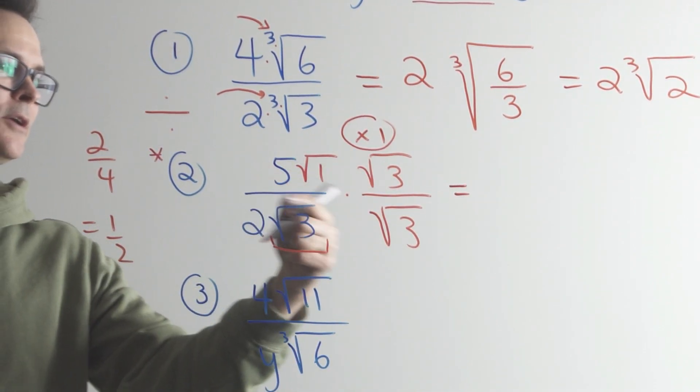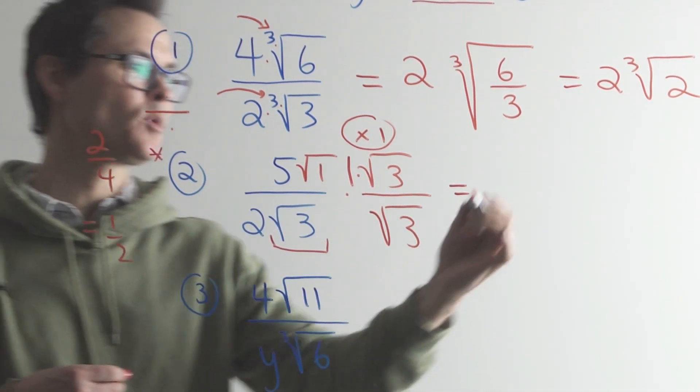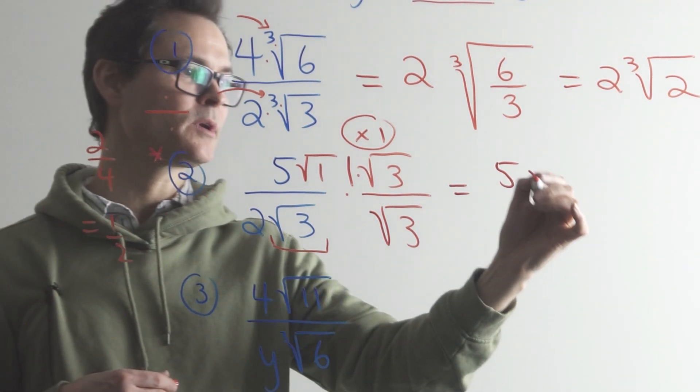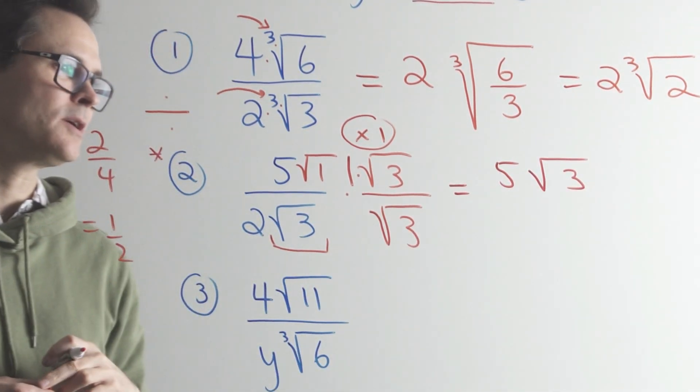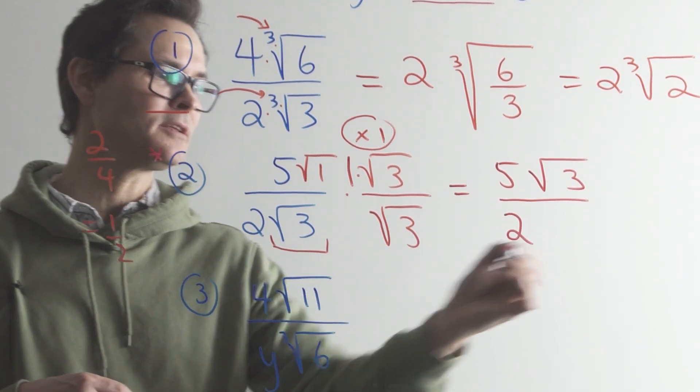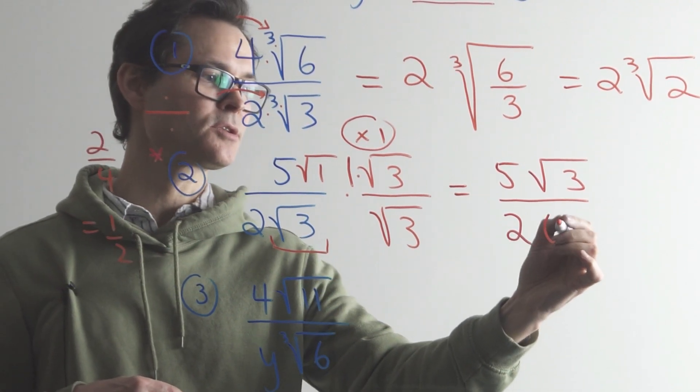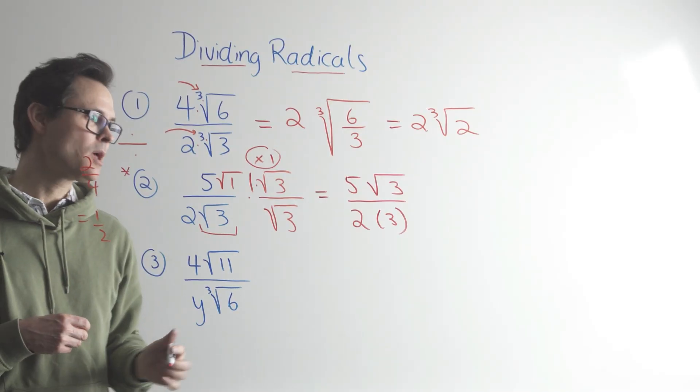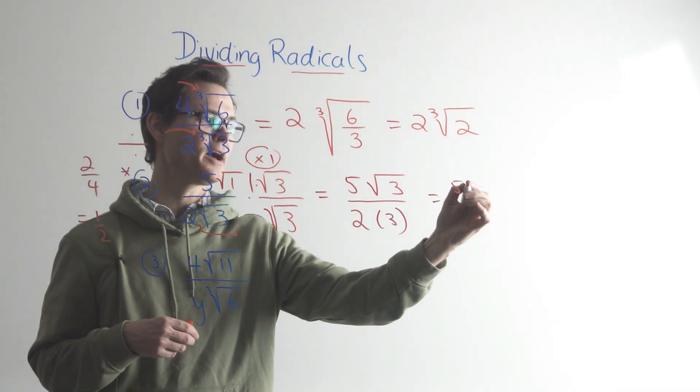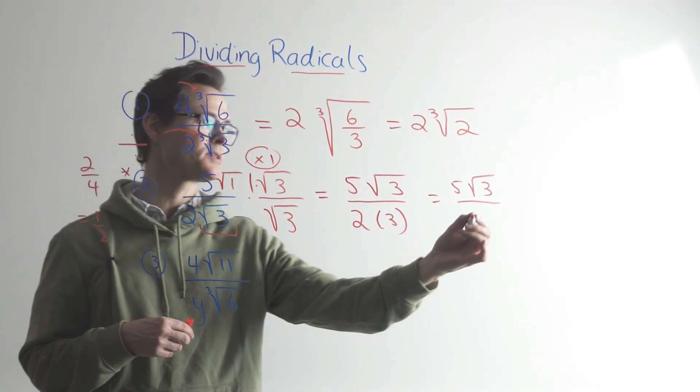So in the numerator, what I have here is, there's a coefficient of one there. Five times one is five. And then the square root of one times the square root of three is the square root of three. In the denominator, this is where the magic works. The two has to stay. It's sitting there. And then the root three times the root three is actually just three. Okay? And then simplify the denominator. So that's gonna give me a five square root three all over two times three, which is six.